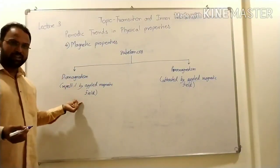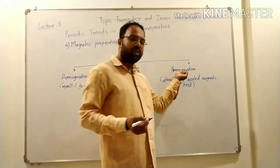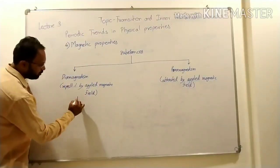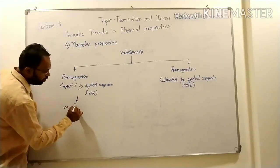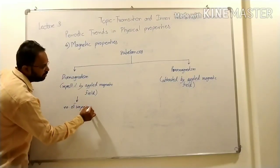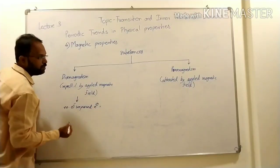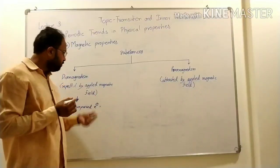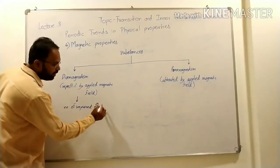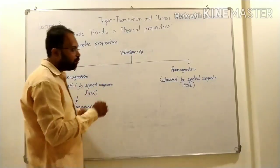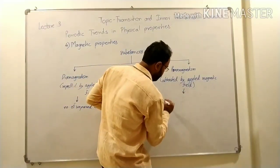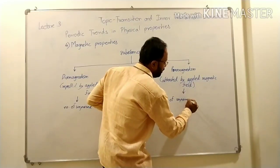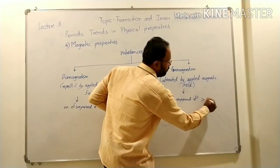These substances are called diamagnetic substances and these are called paramagnetic substances. The classification depends upon the number of unpaired electrons. For diamagnetism, the number of unpaired electrons is zero. For paramagnetism, the number of unpaired electrons is more than zero.